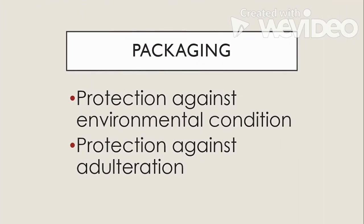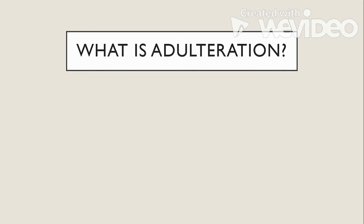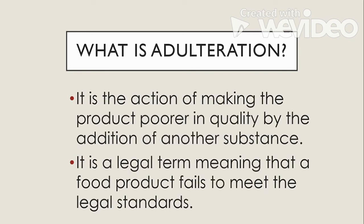We also have packaging. It is when we protect the product against environmental conditions such as moisture, heat, and light, as well as from fungi, bacteria, insects, and rodents. We need to properly package and seal the drug product to protect it against adulteration. Adulteration is the action of making the product poorer in quality by the addition of another substance. It is also a legal term, meaning a food product fails to meet the legal standards.